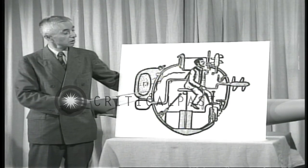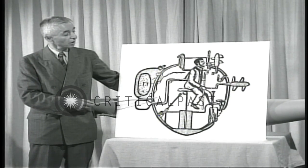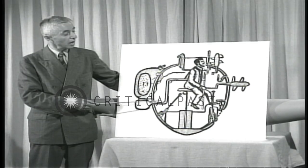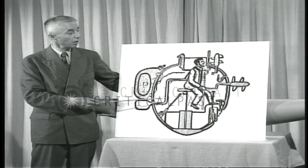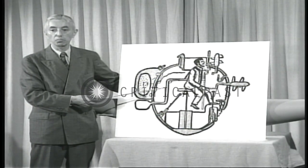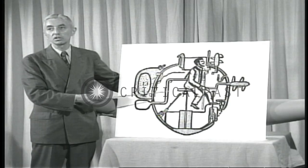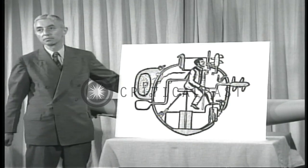This is the first example of improvisation, because Dr. Bushnell's brother, who was supposed to have operated the ship, became sick, and they got an army sergeant to run it.